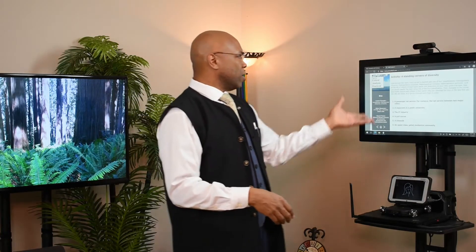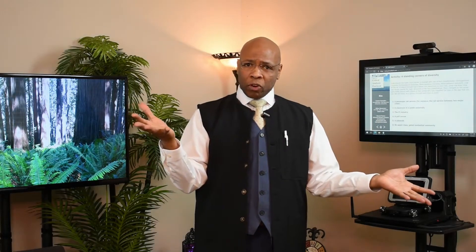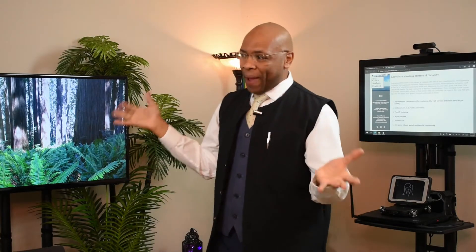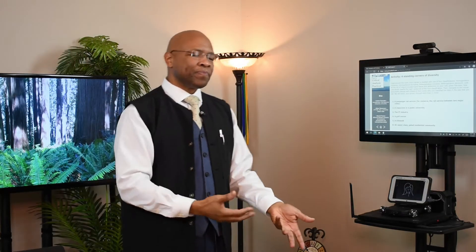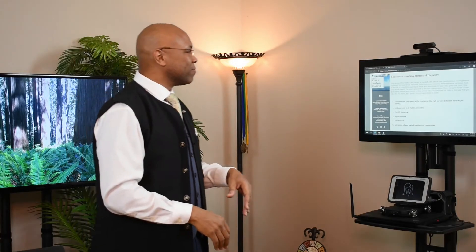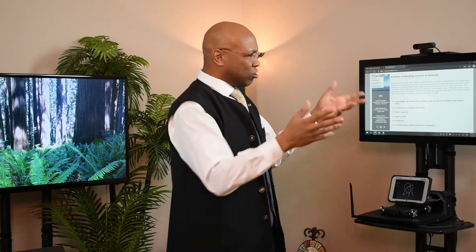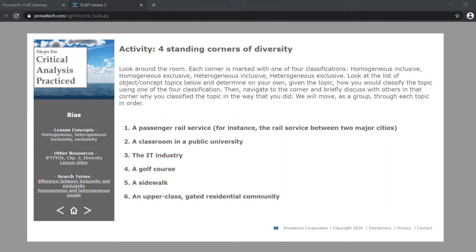That brings us to the first of our activities. We're looking at four standing corners of diversity. The whole point of this activity — sometimes you go to seminars, sitting in classes for two or three hours just listening to somebody talk. At some point you want to get up and move. This activity stems from that — if you're in a room, it gets people mingling. Humans like to do that — we like to talk, get up, maybe see somebody over there we want to talk to. So think about four corners: homogenous inclusive, homogenous exclusive, heterogeneous inclusive, heterogeneous exclusive.